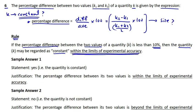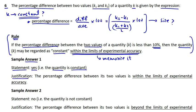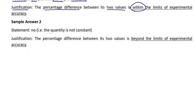The phrase 'within the limits of experimental accuracy' is very important and must be memorized. In the actual ATP paper, if the quantity is constant, write 'Yes' for the statement and justify it by writing: 'the percentage difference between its two values is within the limits of experimental accuracy.' If it is not constant, write 'No' and justify: 'the percentage difference is beyond the limits of experimental accuracy.'